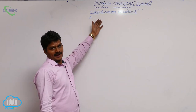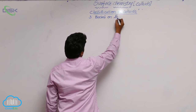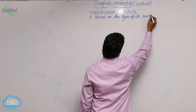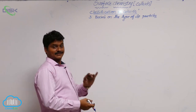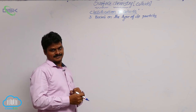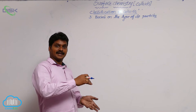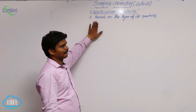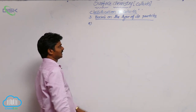Let's see the third classification of colloids based on the type of dispersed phase (DP) particles. Till now we have discussed classification based on physical states of DP and DM — in that first category there are eight types. Based on the affinity between DP and DM, there are two types: lyophilic and lyophobic. Now, this third category is based on the type of DP particles.